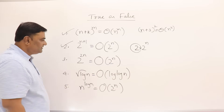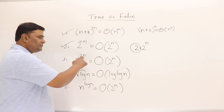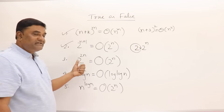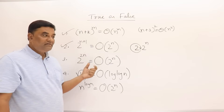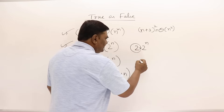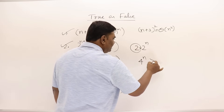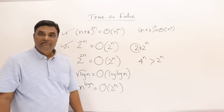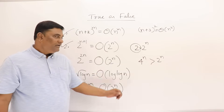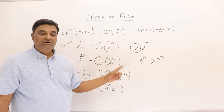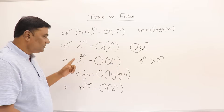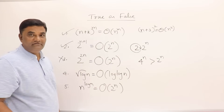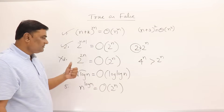Next: 2^(2n) = O(2^n). But 2^(2n) = 4^n, and 4^n is greater than 2^n. So 2^n cannot be an upper bound for 4^n. The correct statement would be O(4^n), not O(2^n). This statement is wrong.